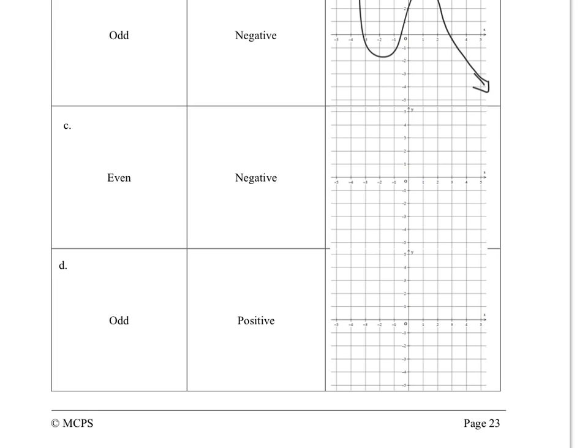Even degree and negative, both end behaviors will go to negative infinity. An odd positive leading coefficient, our end behaviors go in this manner. There's an odd positive.